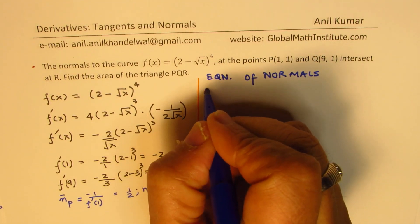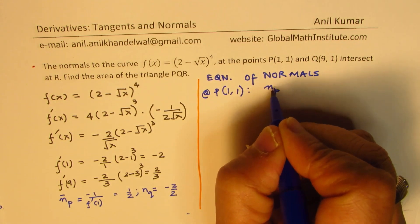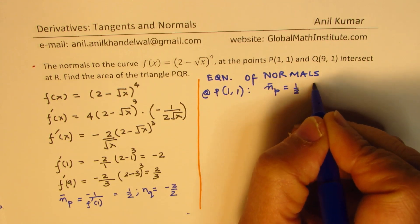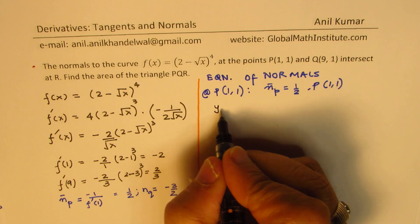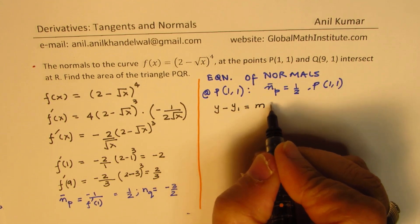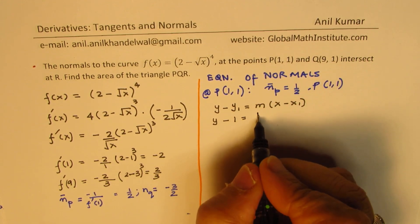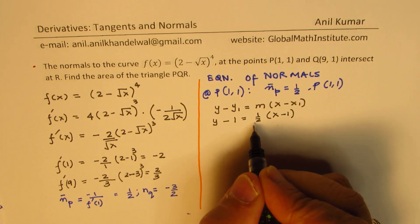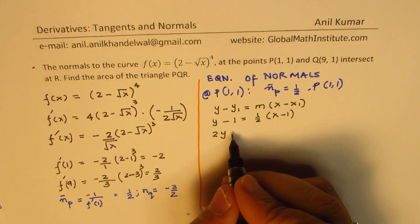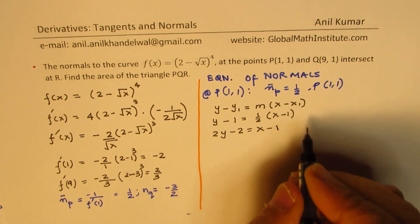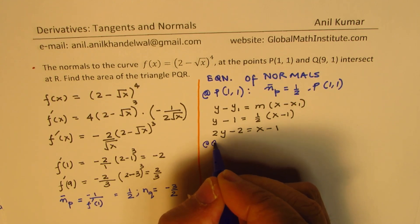Now let's find the equation of the normals. At P(1, 1), the slope of the normal is 1/2. Using y − y₁ = m(x − x₁): y − 1 = ½(x − 1), so 2y − 2 = x − 1. That is our first equation of the normal.